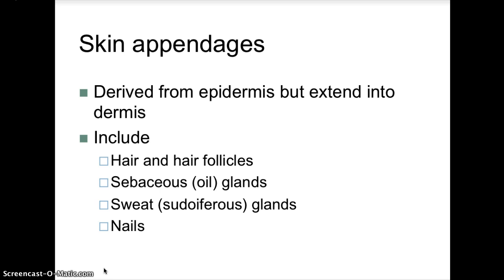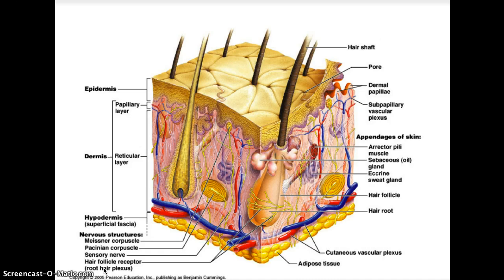Our next topic is skin and its appendages. These are derived from the epidermis but extend into the dermis. What we have here are hair and hair follicles, sebaceous glands or oil glands, sweat glands called sudoriferous glands, and fingernails. Hair, nails, and glands are structures of epidermal origin, even though many of them — especially hair follicles and glands — are largely located in the dermal layer. On a diagram of skin appendages, you can see the arrector pili muscle, the sebaceous gland, the eccrine sweat gland, the hair follicle, and the hair root.